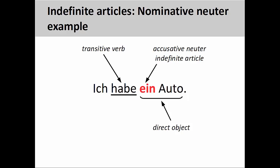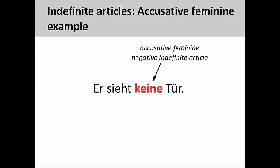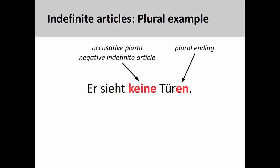Paying attention to verb forms is also important when dealing with feminine and plural indefinite articles. To distinguish between them, you will need to be familiar with plural noun endings. In the sentence 'Er sieht keine Tür' — 'He sees no door' — the noun does not have a plural ending but receives the action of the verb, so 'keine' is accusative feminine. However, if the noun has a plural ending, 'keine' would be accusative plural — 'He sees no doors.'